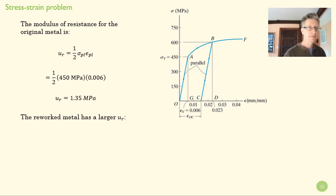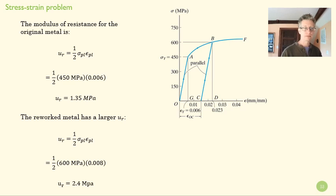The reworked metal has a different energy of resistance, right? It can absorb more energy before it's going to be plastically deformed. So you can see that the energy or the modulus of resistance is larger for the strain-hardened metal.